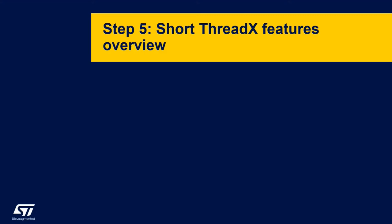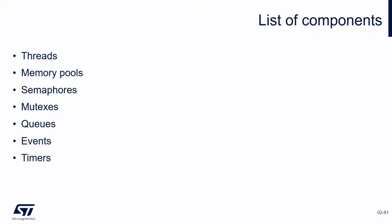We now move to the short ThreadX feature overview. We are going to see threads, memory pools, semaphores, mutexes, queues, events, and timers.